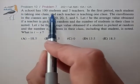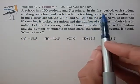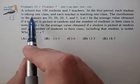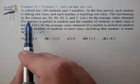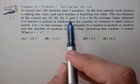A school has 100 students and 5 teachers. In the first period, each student is taking one class, and each teacher is teaching one class. The enrollments in the classes are 50, 20, 20, 5, and 5.